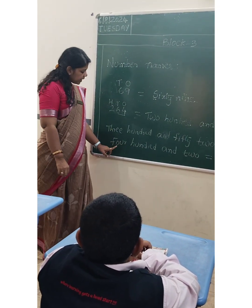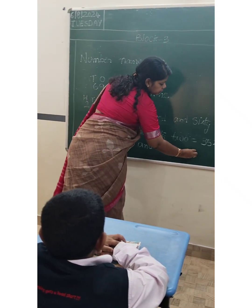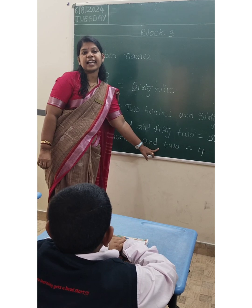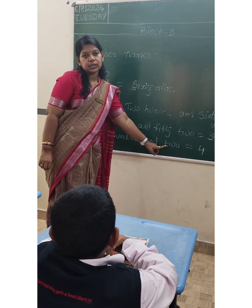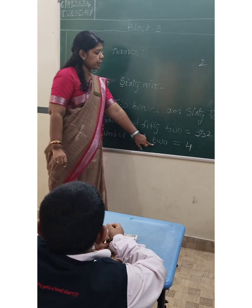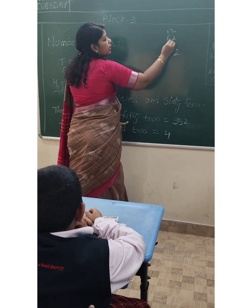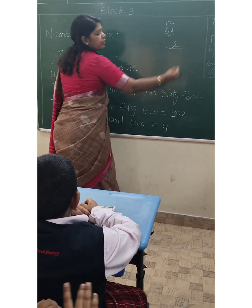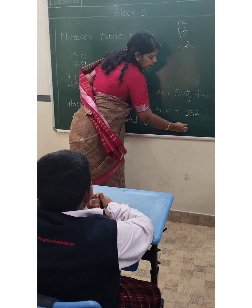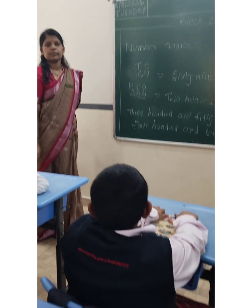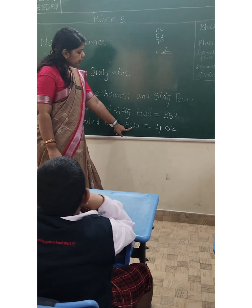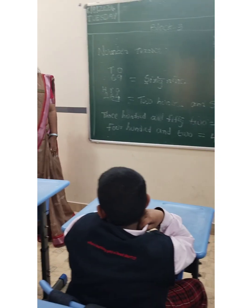Four is in which place? Hundred's place. So first we are writing four hundred and two. Two will come in the one's place. Is there anything in ten's place here? No. They are saying only two — two is in one's place. There is no ten's place number, so what you write is four hundred and two — 402.